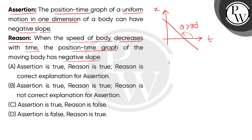We can see that the graph is making an angle with the positive direction of x-axis which is more than 90 degrees. So this angle is obtuse. We can see that tan of (90 degrees + θ), meaning that in the second quadrant we will get the value of tan which is negative. So if the particle is going back to its original position, the position-time graph will have a negative slope.